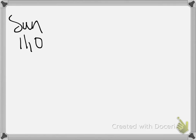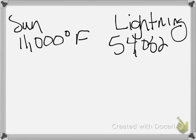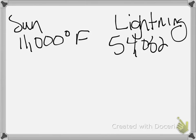Now let's look at our numbers again. We have the sun that has 11,000 degrees Fahrenheit, or we have lightning, which is 54,032 degrees Fahrenheit. Now we know lightning is a much greater temperature.